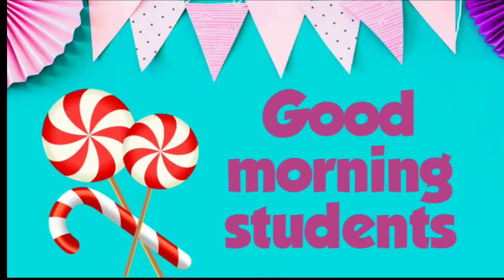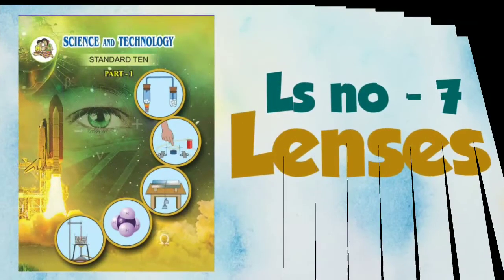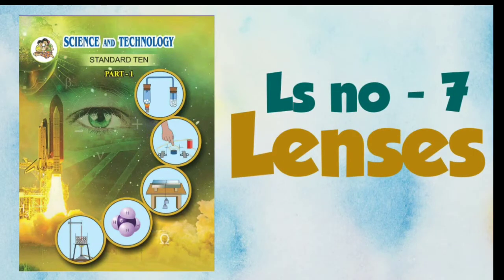Good morning students. We are studying our lesson number seven, lenses, from science part one. In today's video we shall be learning about apparent size of an object, uses of concave and convex lenses, and persistence of vision. Let's begin.